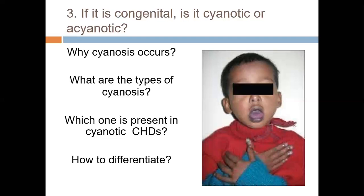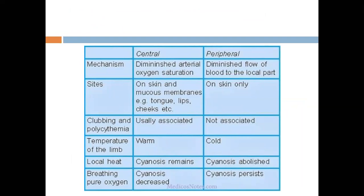There are two types of cyanosis. Central cyanosis appears on the tongue and internal mucosa of the mouth. Peripheral cyanosis appears on the lips and extremities and does not necessarily indicate cardiac disease. In cyanotic congenital heart disease, it must be central cyanosis. To differentiate, you look at the site of occurrence and relate it to the cause of the heart defect.